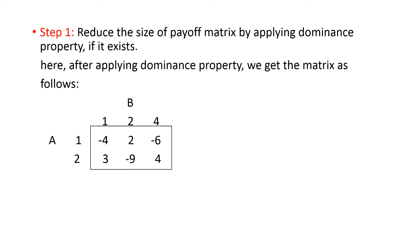Now, coming to the graphical solution. Step 1: reduce the size of the payoff matrix by applying dominance property. This was discussed in the last class — how to find the value of the game using dominance property for pure strategy and mixed strategy games. Apply row dominance and column dominance. After applying dominance property, you get a reduced matrix. Here, column 3 and column 5 are ignored, leaving player A with 2 strategies and player B with 3 strategies: 1, 2, and 4.